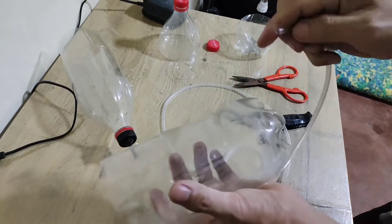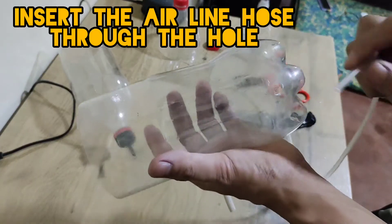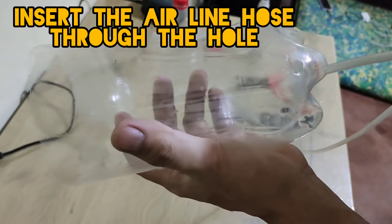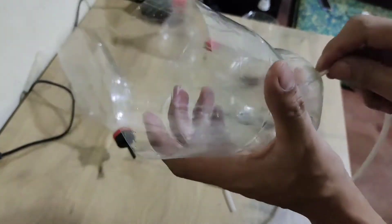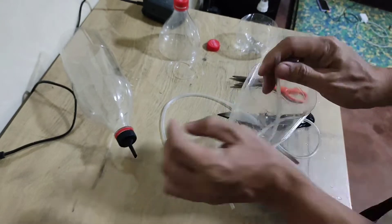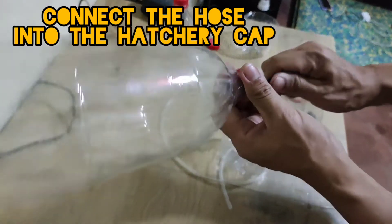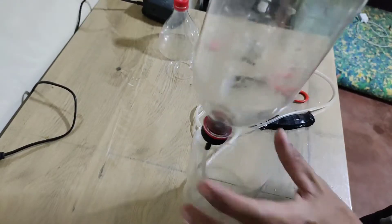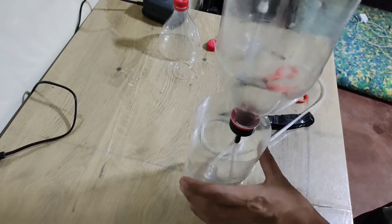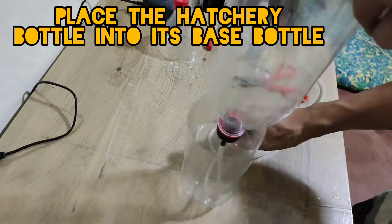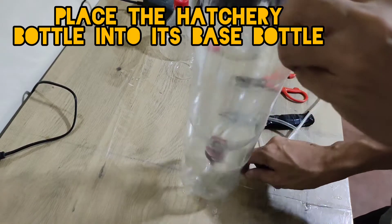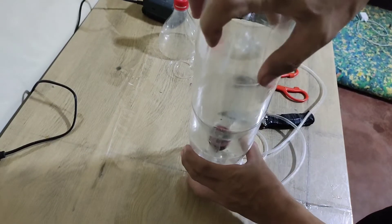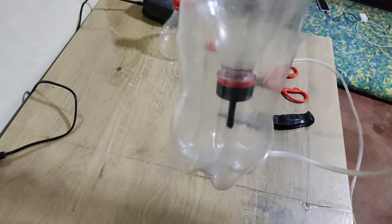Now let us insert this airline tubing into the hole that we just made, then connect it to our hatchery cap. Let's fit this well and place it into its base. So this is how it should look like.